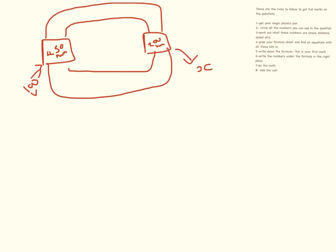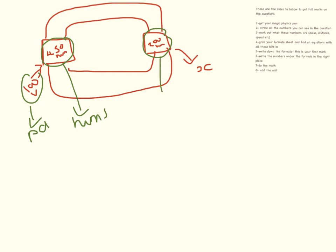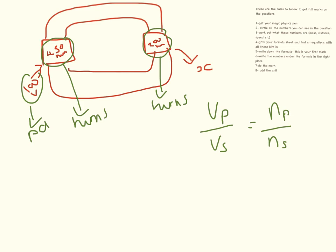This is our first question. Quite often you might get a picture to interpret, but you can treat it exactly the same way. So circle all of the numbers. The potential difference across the primary coil is 100. The potential difference across the secondary coil is what we don't know. The number of turns in the primary coil is 450. The number of turns in the secondary coil is 200.